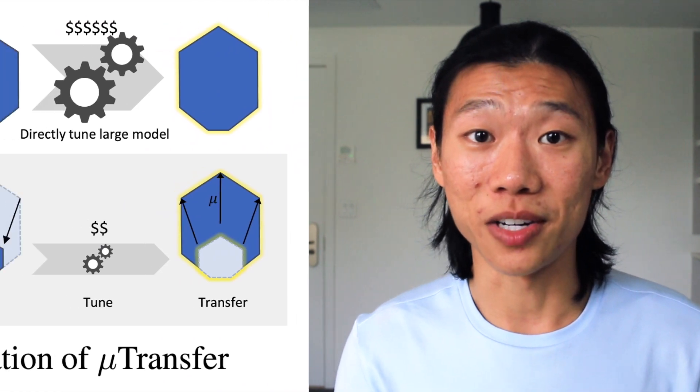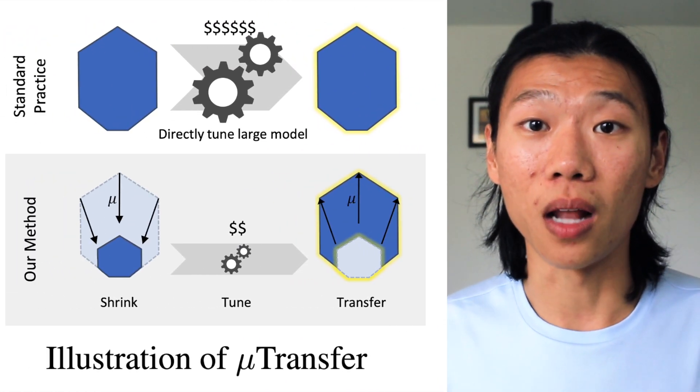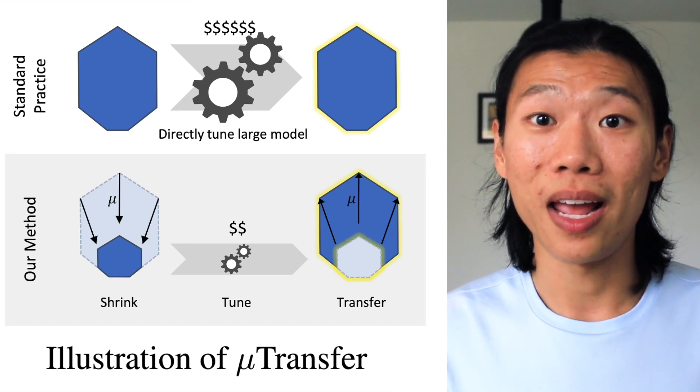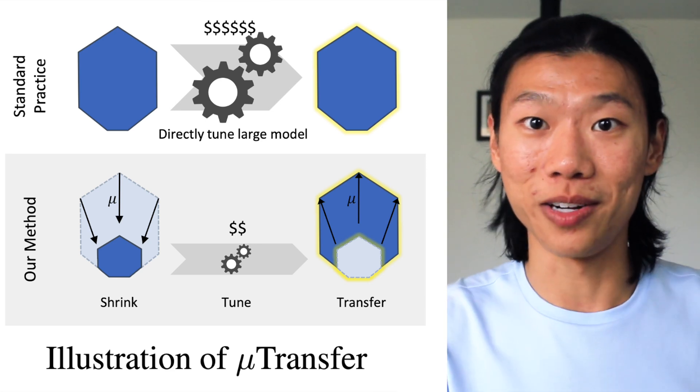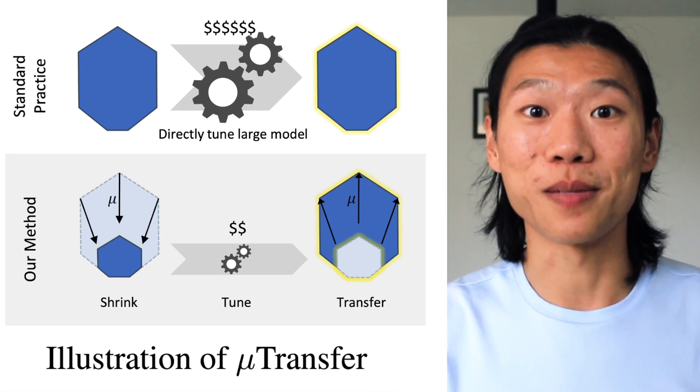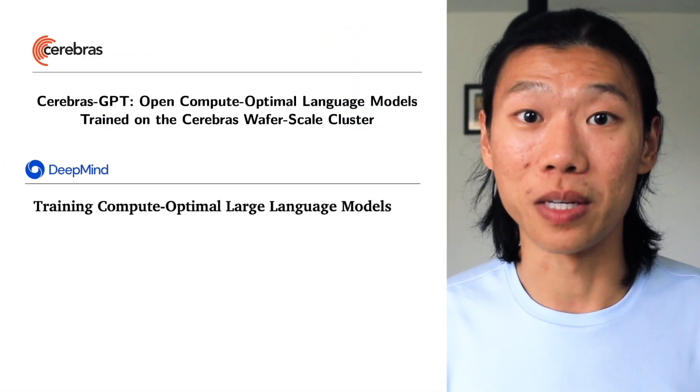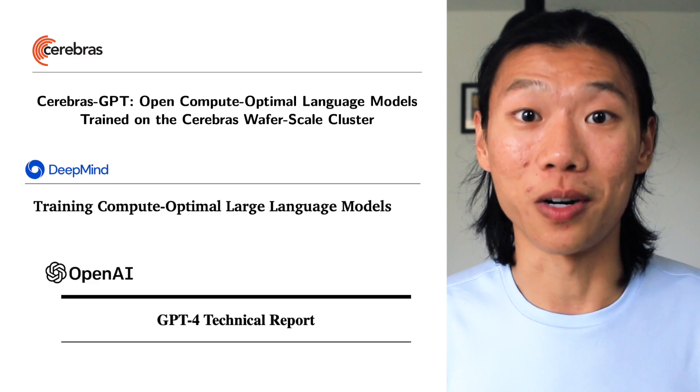Training a large model like GPT-4 requires thousands of GPUs, but what if you can train its hyperparameters on just one GPU? MuTransfer makes hyperparameter optimization of an enormous neural network a lot cheaper than optimizing hyperparameters on a much smaller model and transferring the optimal combination to a large model. It has been used by Cerebras GPT, as cited by Chinchilla from Google DeepMind, and the GPT-4 technical report.